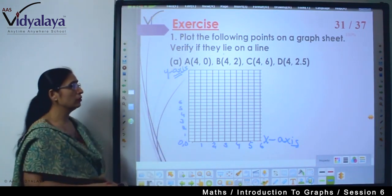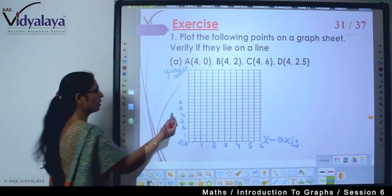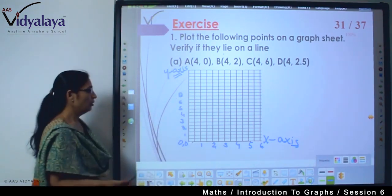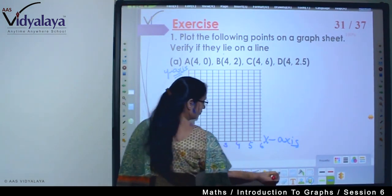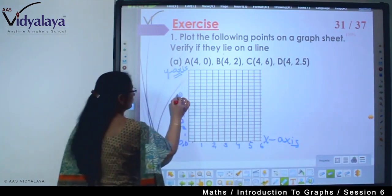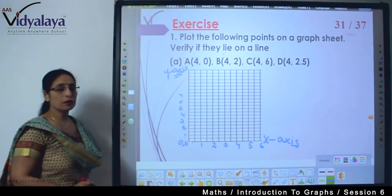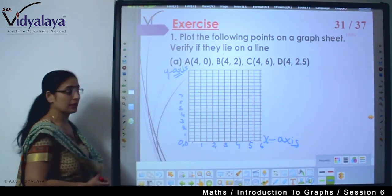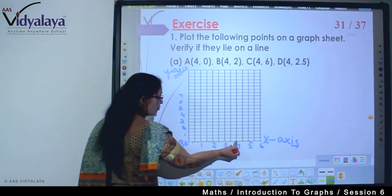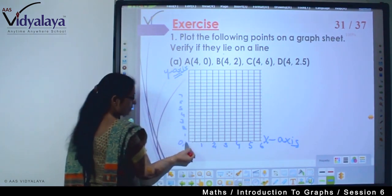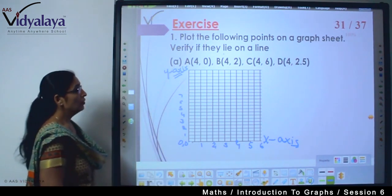I'm taking up to six because I don't have any value more than six. Now our first coordinate is four zero. This means x-axis at four and y-axis at zero, so I will get one dot here.